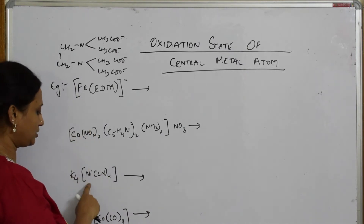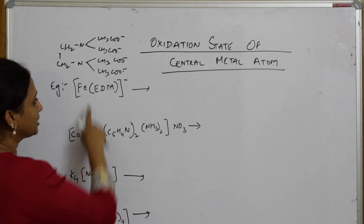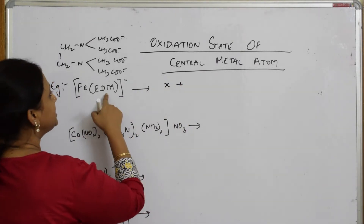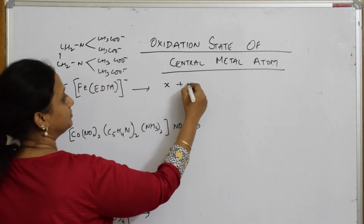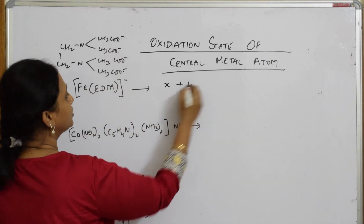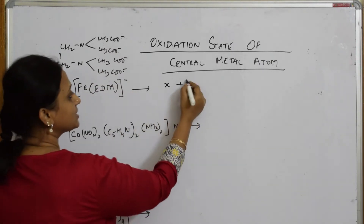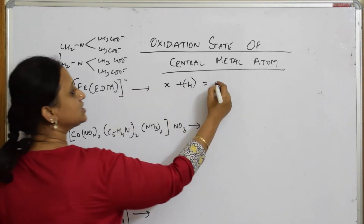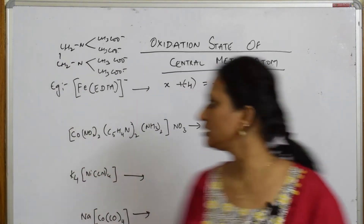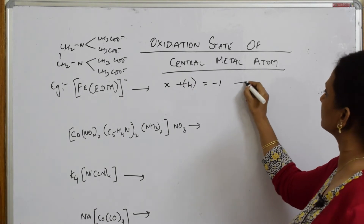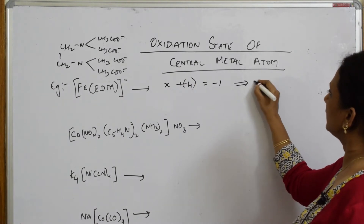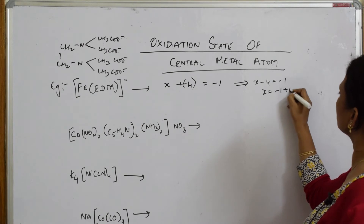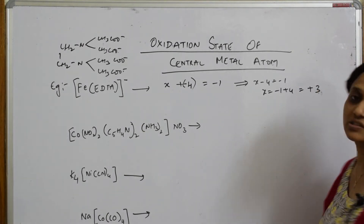To find the oxidation number of the central metal atom, take it as X. EDTA has a charge of minus 4, so X + (−4) = −1 (the overall charge). Solving: X − 4 = −1, therefore X = +3.